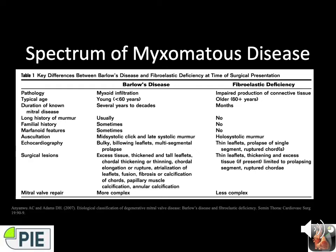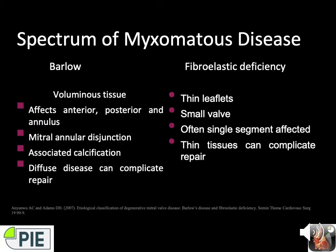Myxomatous disease exists as a spectrum, well described by Adams in his 2007 paper in Seminars in Thoracic and Cardiovascular Surgery. It's not just an academic distinction — the clinical utility is that due to fibroelastic deficiency, it's actually harder to repair. Fibroelastic deficiency is a more challenging repair due to the thinness of the tissue, although technically more simple because only a single segment is affected.